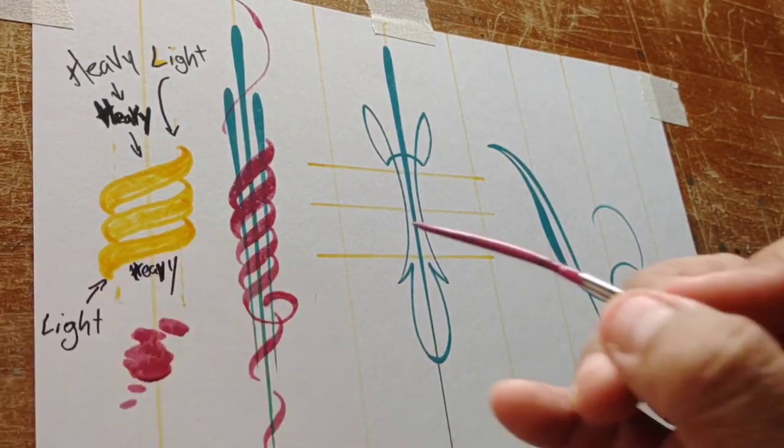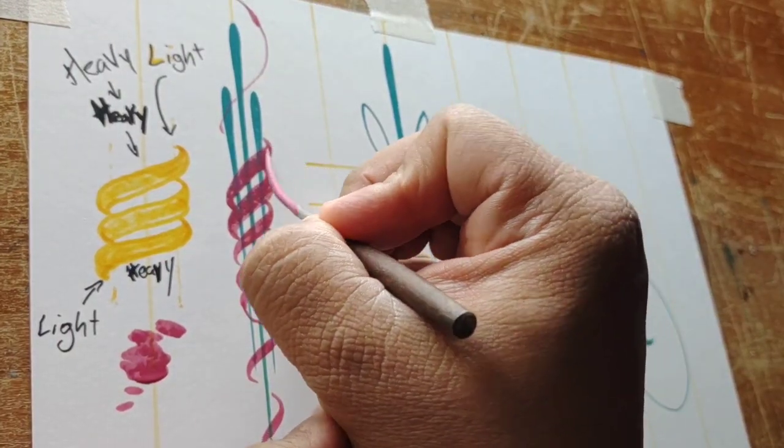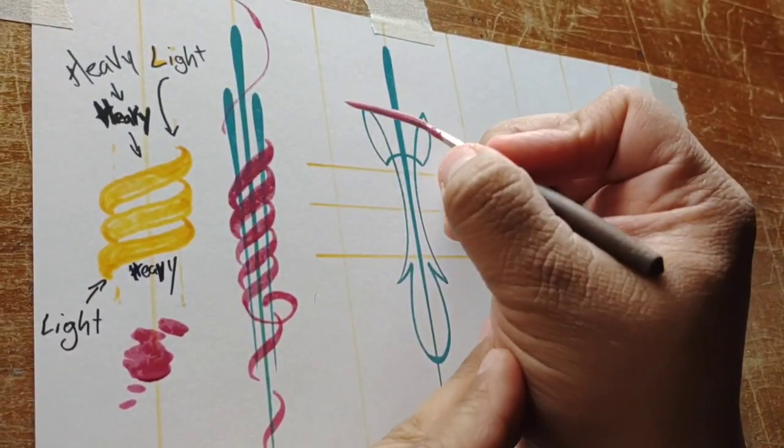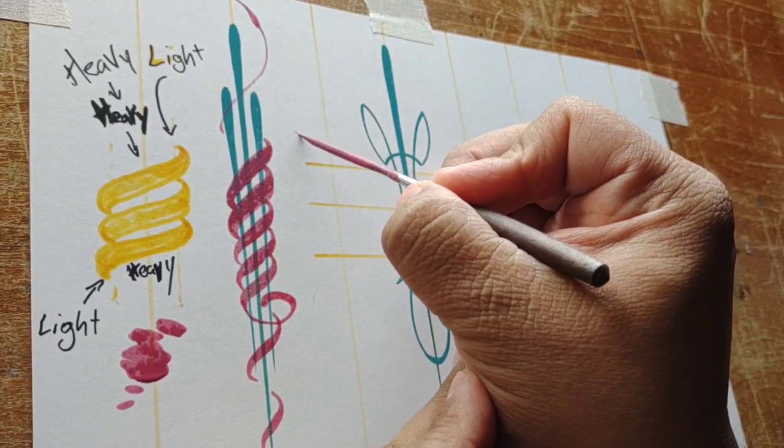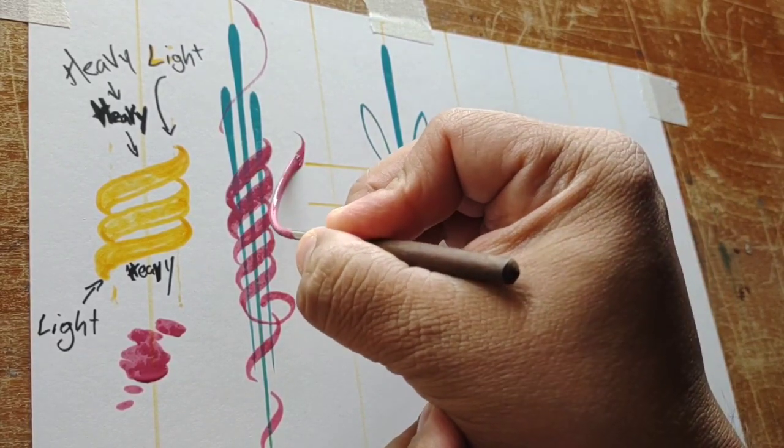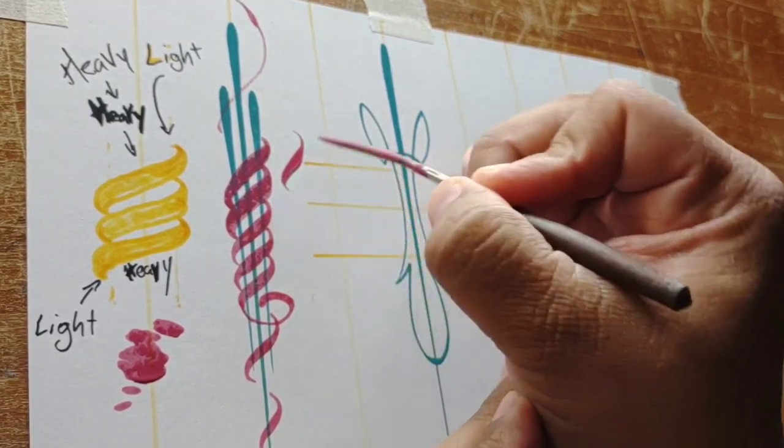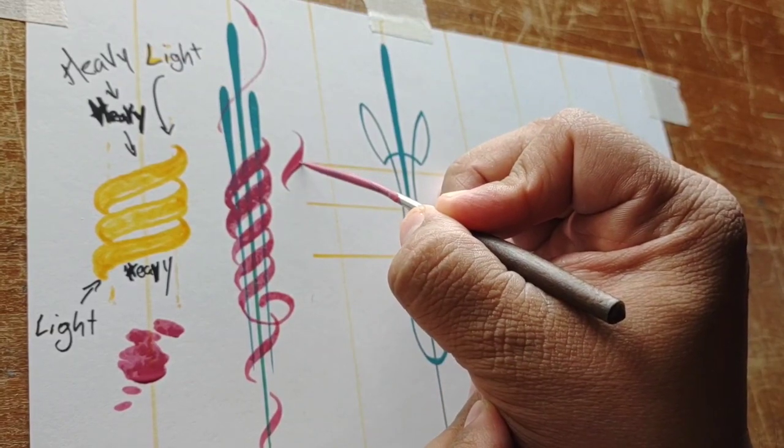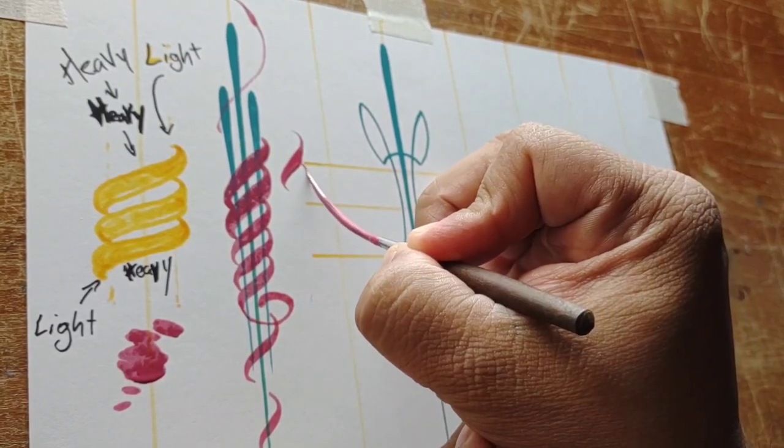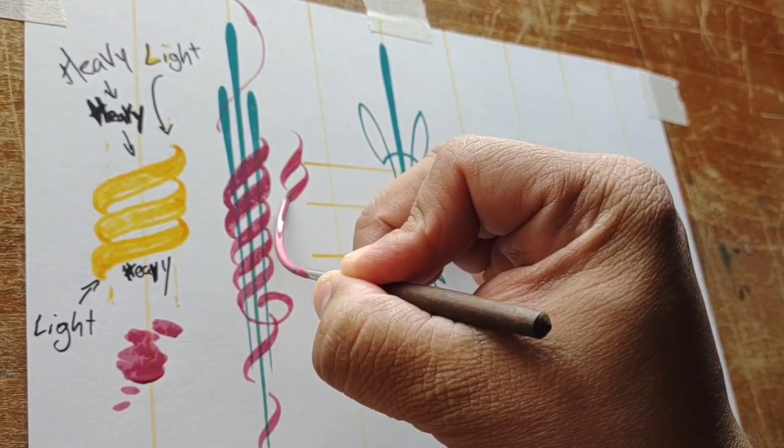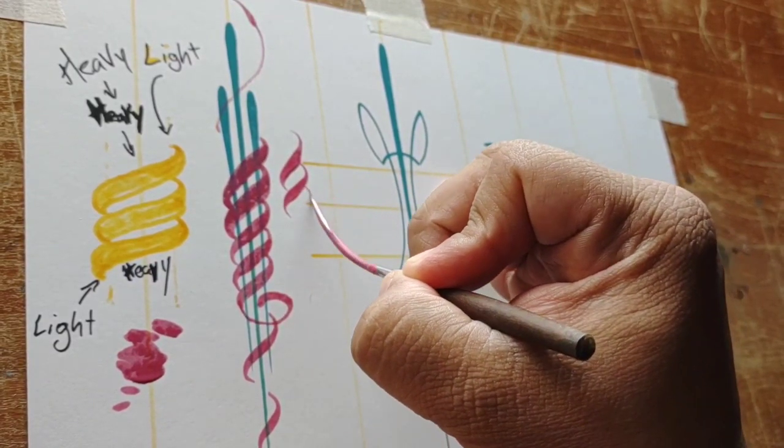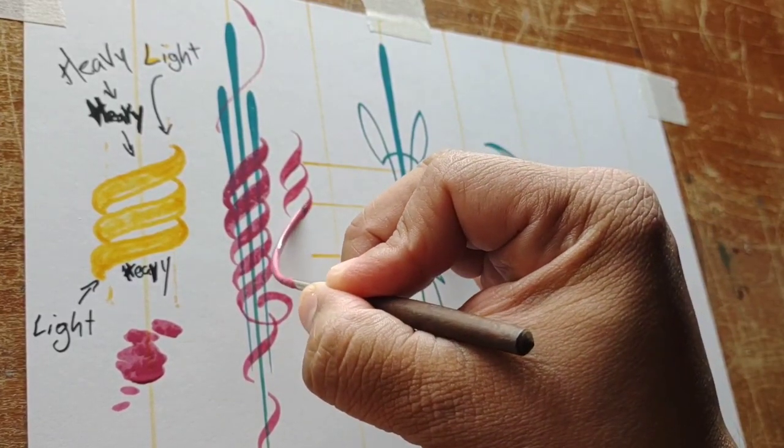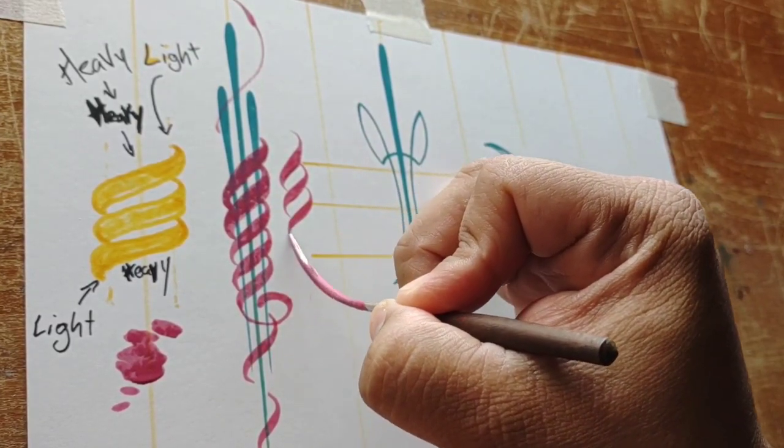You want to start light—start light here. I'm going to show you over here: start light, push down, light, and then do it again. Light, push down, connecting to the other one, and then light. Light, push down, and then light.